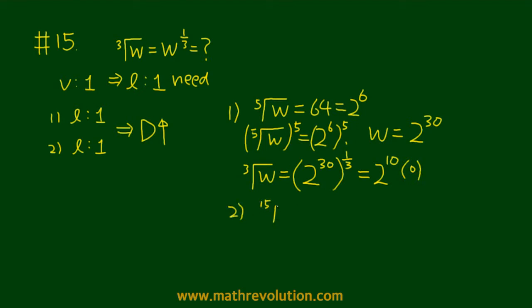What about condition two? It says that the 15th root of W is equal to 4, which is equal to 2 squared, and if we take power of 15 on both sides, then we have W being equal to 2 to the power of 2 to the power of 15, which is again 2 to the power of 30.